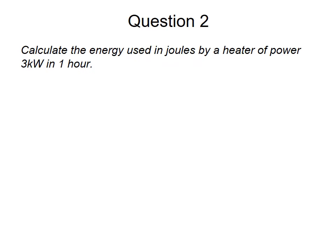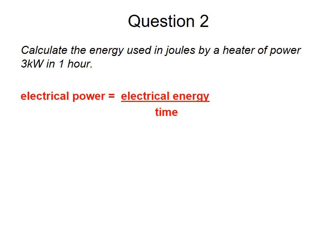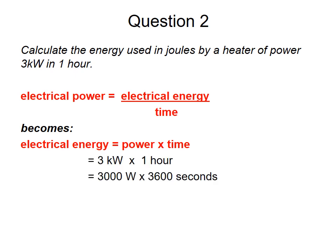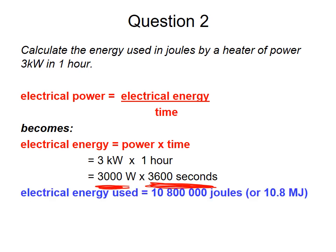Question 2: Calculate the energy used in joules by a heater of power 3 kilowatts in one hour. Rearrange the equation: energy equals power times time. So 3000 watts times 3600 seconds gives 10.8 megajoules. Be careful to convert kilowatts to watts and hours to seconds.